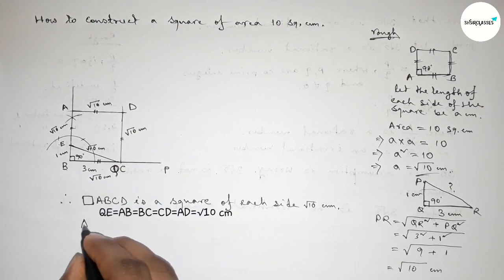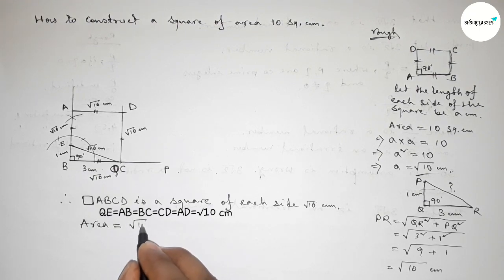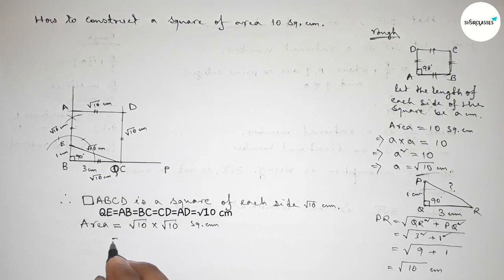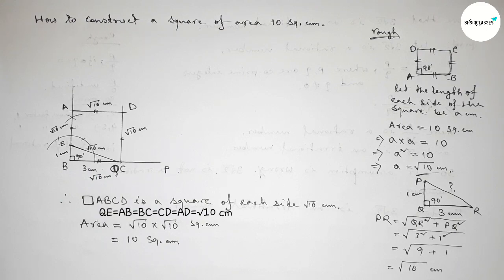To verify: the area of this square equals side × side = √10 × √10 = 10 square centimeters. That's all — thanks for watching. If this video is helpful to you, please share it with your friends and please like, share, and comment.